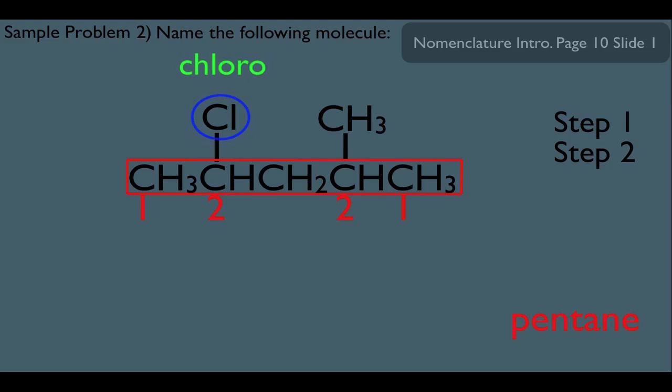What you do is look at each substituent. This is a chloro member, and this is our methyl over here. And again, you go by the alphabet. Since C comes before M, that means he has the priority in this case. So, we're going to number from left to right in this case. So, that's how you handle a situation like that.